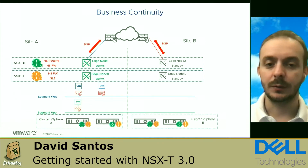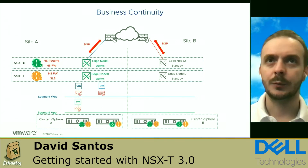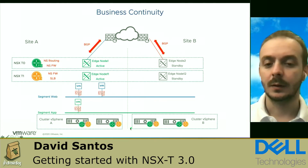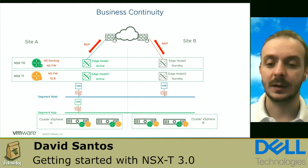The next step is business continuity. We can use NSX to extend our data centers and easily deploy a disaster recovery or multi-site strategy. In this case, we have two clusters — cluster A and cluster B. They can be different vCenters; in version 3.0 we can integrate up to 16 vCenters to NSX. We're going to use NSX to provide L2 connectivity between the data centers.